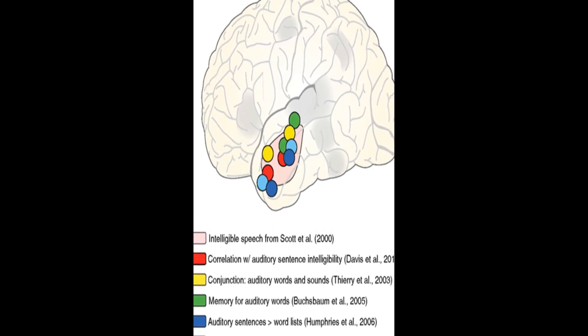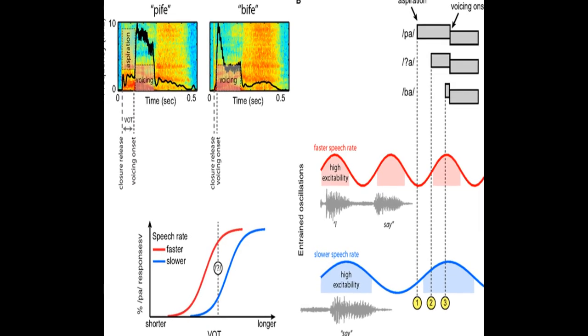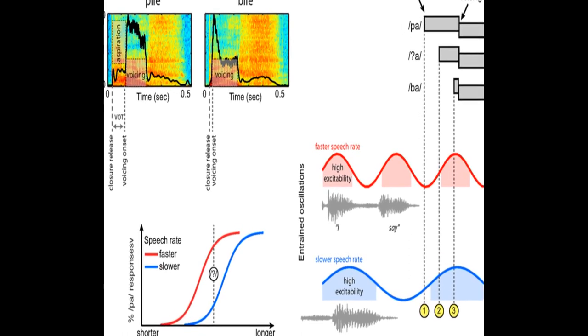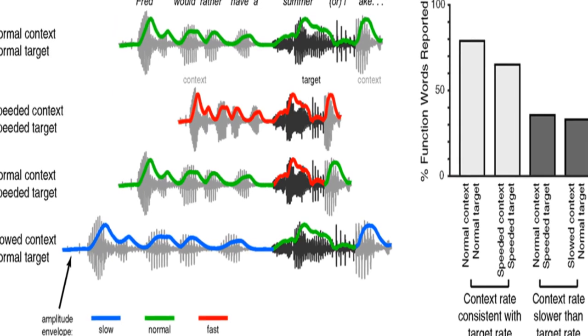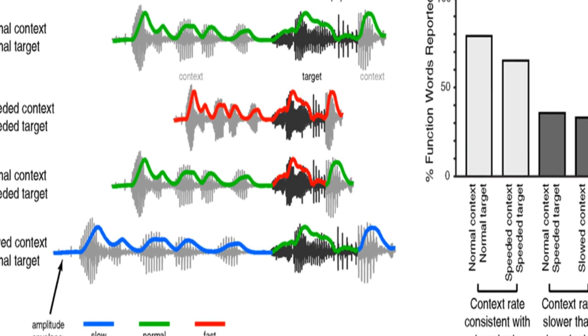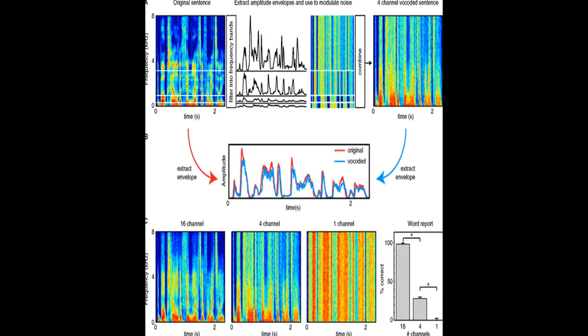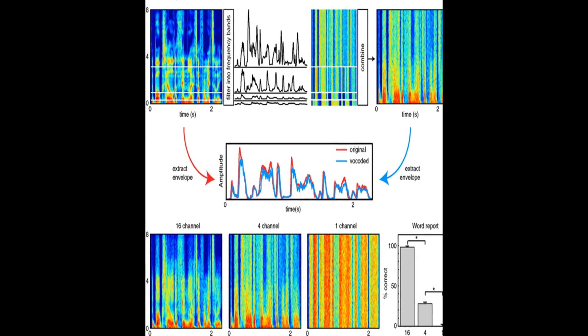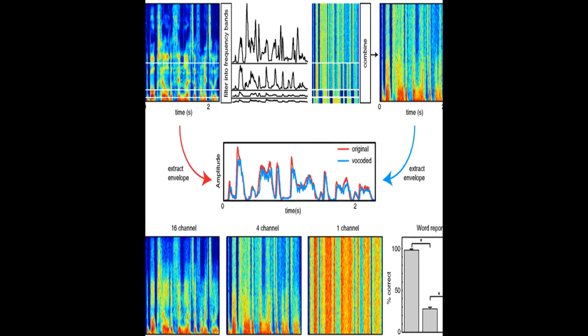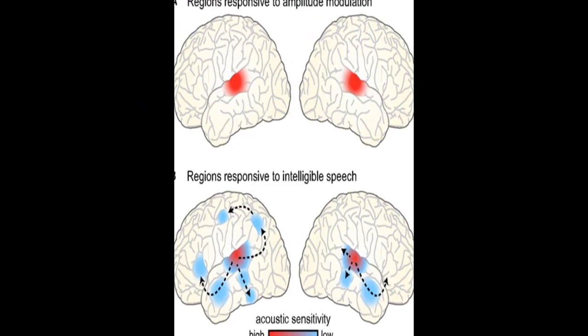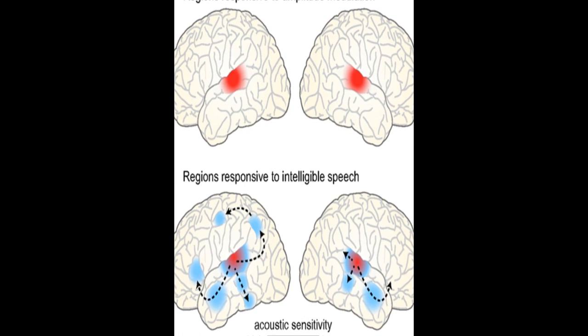The article suggests a framework through which neural entrainment to speech rhythm can explain effects of speech rate on word and segment perception. It also proposes that lateral anterior temporal cortex functions in a domain-general fashion to support ongoing memory and integration of meaningful input, forming the foundation of a rhythmic hierarchy supporting spoken language.